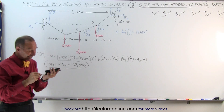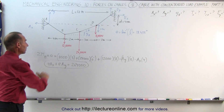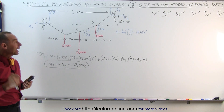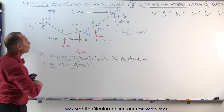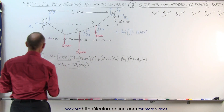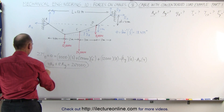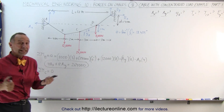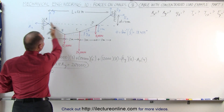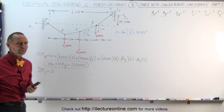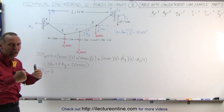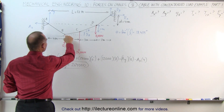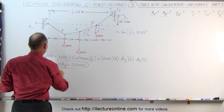We need a second equation to find A sub X and A sub Y. The nice thing about cables is that we can pick any interior point. Let's pick point C. We're going to take the sum of the moments about point C, which also equals zero. But we only need to consider just one side of the cable — we can completely ignore the other side. You can't do that on fixed structures, but you can with cables. Starting with the first force: we have 12,000 Newtons.